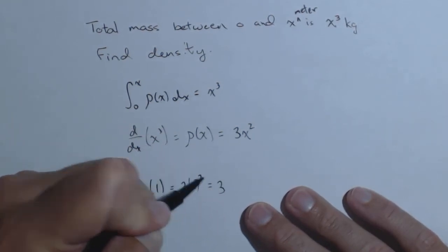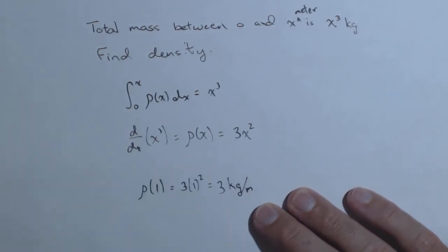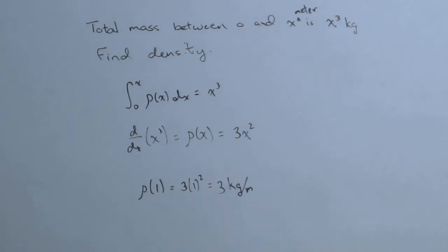Since this is a density at one meter, the result is 3 kilograms per meter. We're just working backwards to recover the density function.